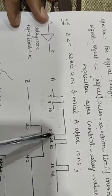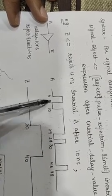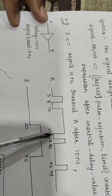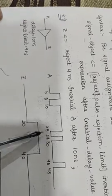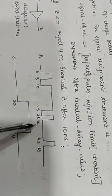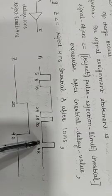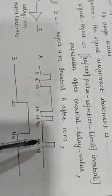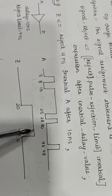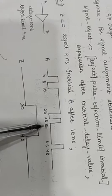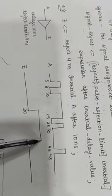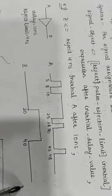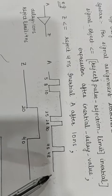Now checking for the transition from 1 to 0: the time delay is 3 nanoseconds, which is again less than the pulse rejection limit. Then at 30 nanoseconds and 45 nanoseconds, the time gap is 15 nanoseconds, which is more than the pulse rejection limit. So in the output waveform, after a delay of 10 nanoseconds from the 30 nanosecond point, I get a change in output from 1 to 0. We continue checking subsequent time intervals to determine the full output waveform.